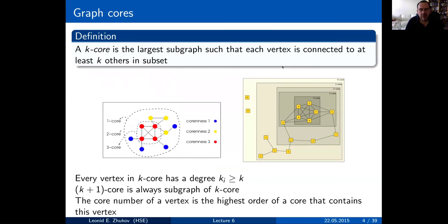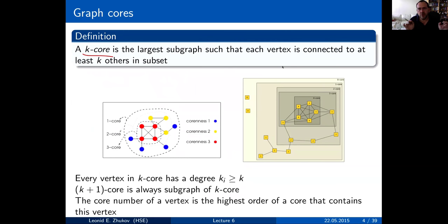The word 'core' actually has a pretty formal definition. The k-core of the graph is the largest subgraph such that each vertex is connected to at least k other vertices in that subset. K-cores are sort of included subgraphs, one into another — it's a matryoshka structure where you have things placed inclusively one into another.